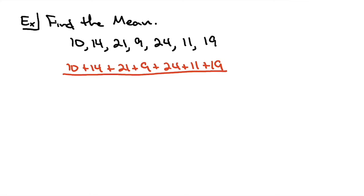So there are 1, 2, 3, 4, 5, 6, 7 numbers in the list. So at this point you're probably going to grab a calculator. You're going to add across the top. We're going to have 108 when using a calculator to add those up. And then we are going to divide by 7.